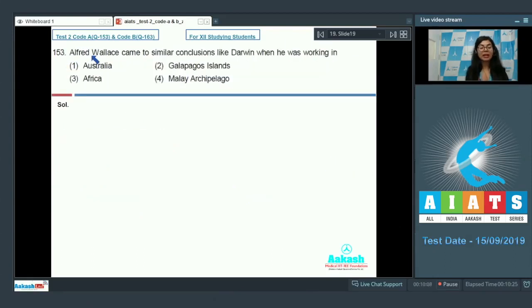Moving on, question number 153. Alfred Wallace came to similar conclusions like Darwin when he was working in. So the place of study of Alfred Wallace is asked. He worked in an extensive group of islands known as Malay archipelago. Just like Darwin, he also concluded that the animals which better survive or are better fit for the environment are selected by nature. So the correct option is 4.